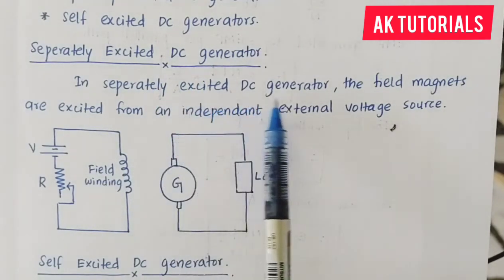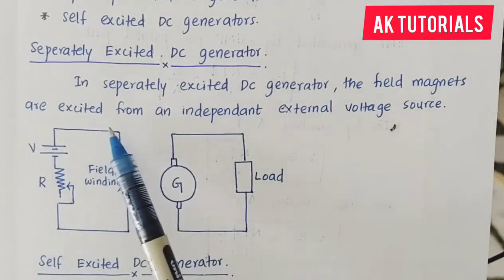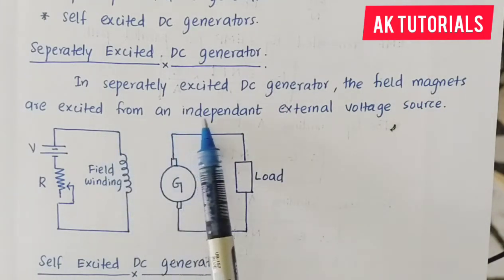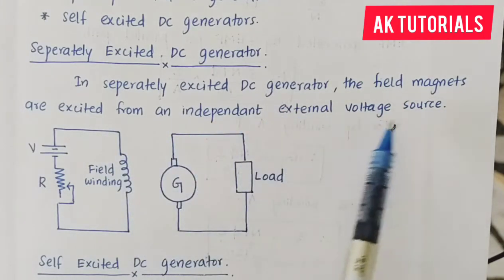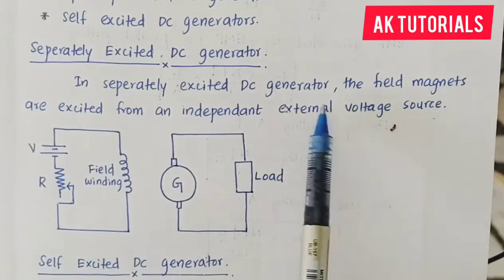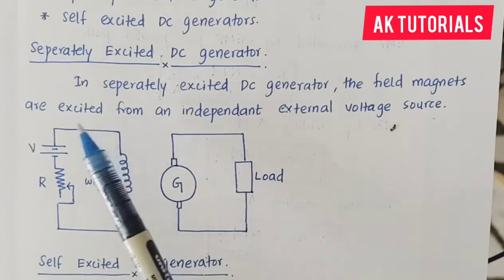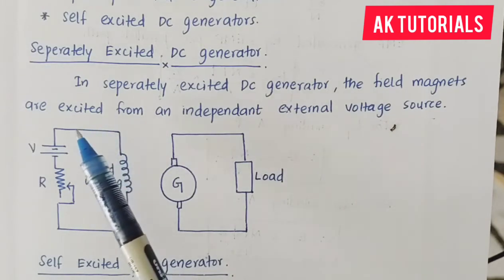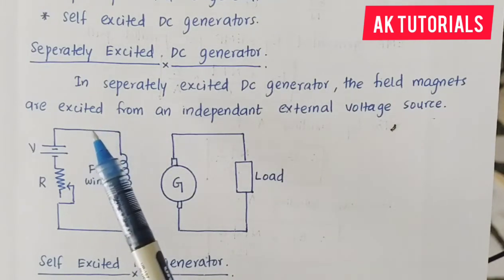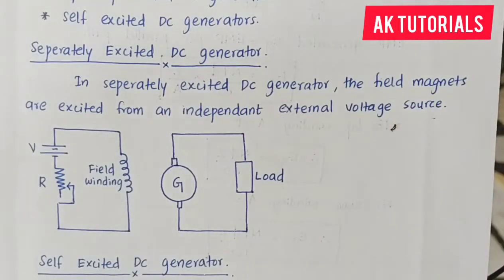In the separately excited DC generator, the field magnets are excited from an independent external voltage source. This external supply is the key feature of the separately excited DC generator.